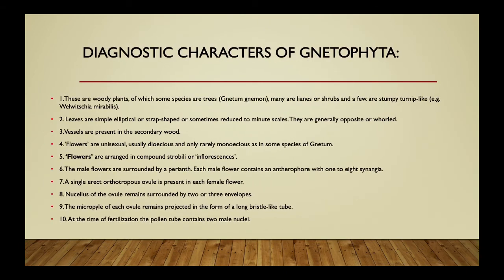Gnetophyta includes woody plants — some species are trees like Gnetum and Gnetum gnemon, while many are shrubs or stumpy woody forms such as Welwitschia and Ephedra. Leaves are simple, elliptical, or strap-shaped, and sometimes reduced into minute scales. This scale-like reduction is a xerophytic characteristic, minimizing evaporation rate to conserve water. Leaves are generally opposite, and vessels are present in the secondary wood.